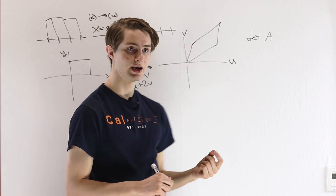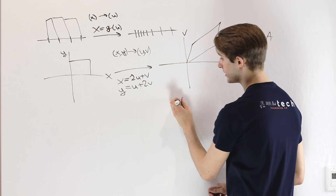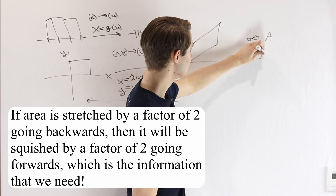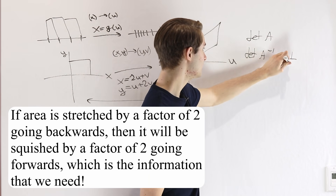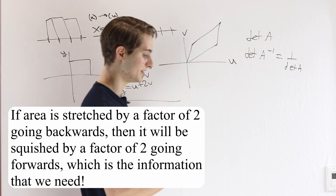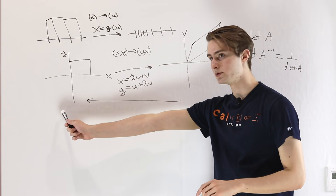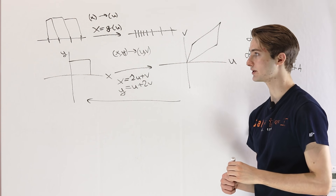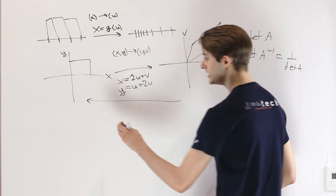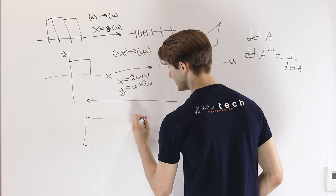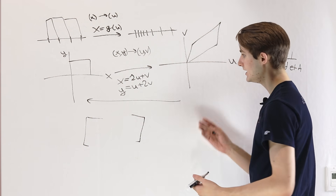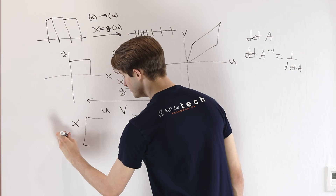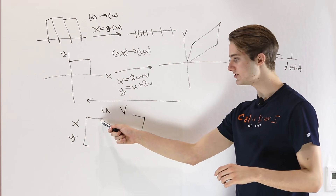Instead of finding how much area gets scaled up in the forward direction, we find how much area gets stretched going in the opposite direction. That corresponds to the fact from linear algebra that the determinant of an inverse equals 1 over the determinant of the original matrix. So we look at the backwards mapping and ask how much area is stretched when we go the opposite direction. The idea is that each number in the matrix represents a particular mapping from an input to an output — in this case, mapping u and v values to x and y values.